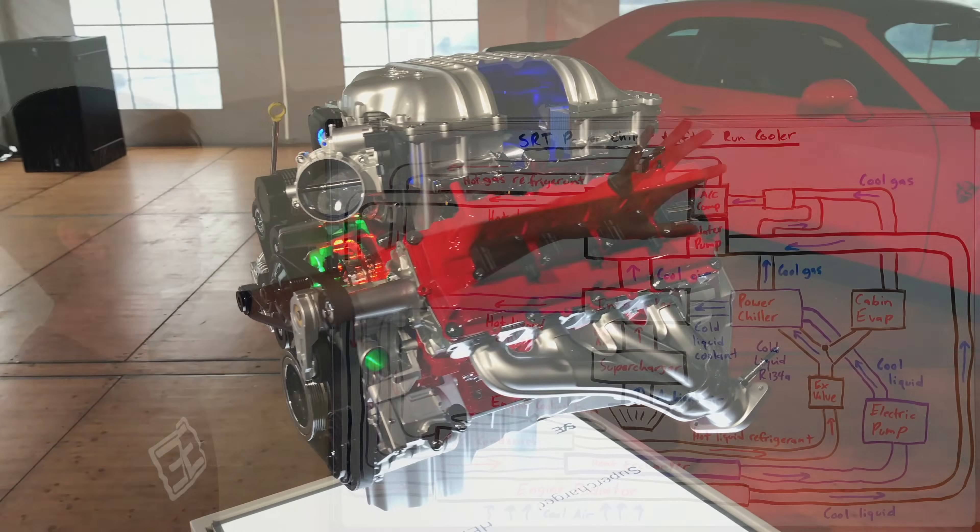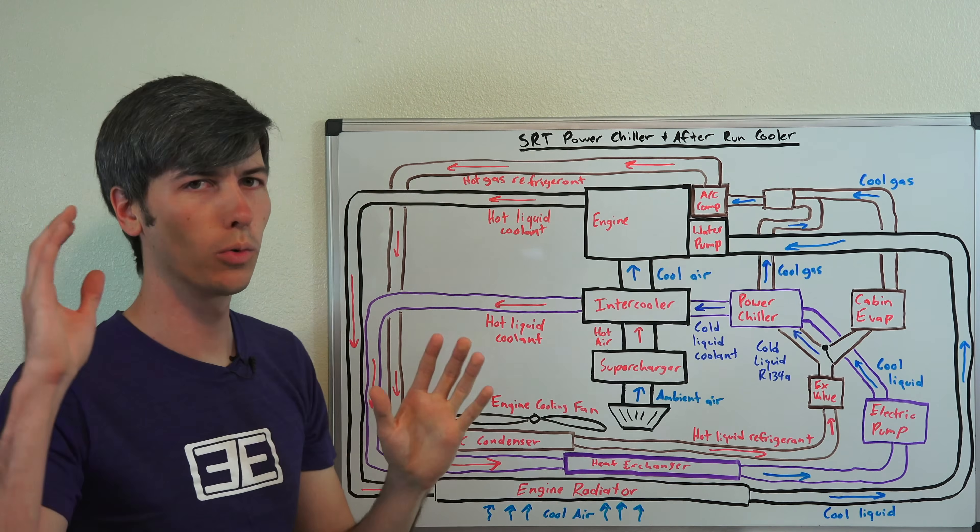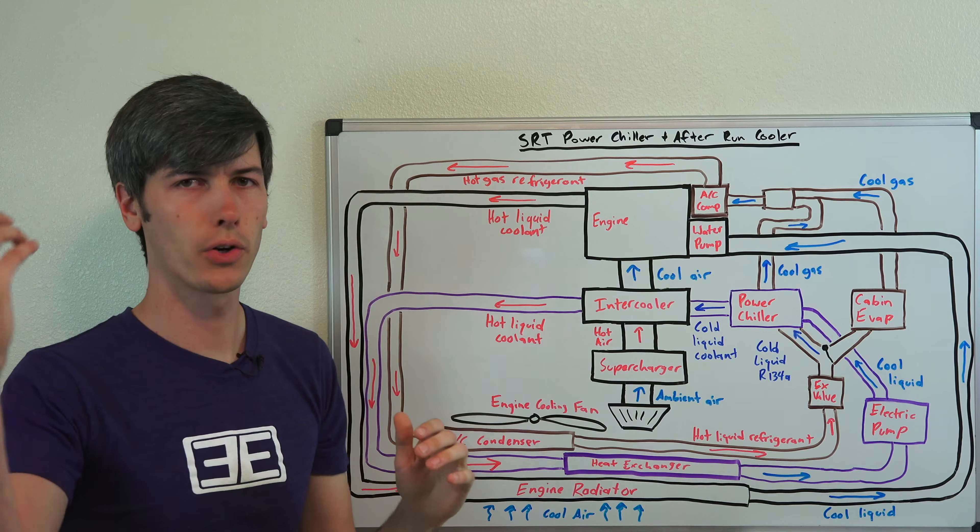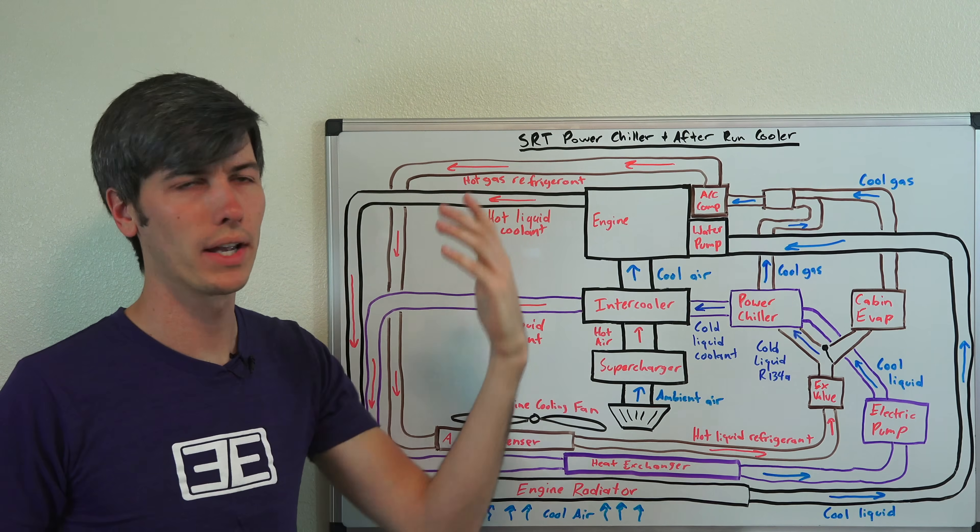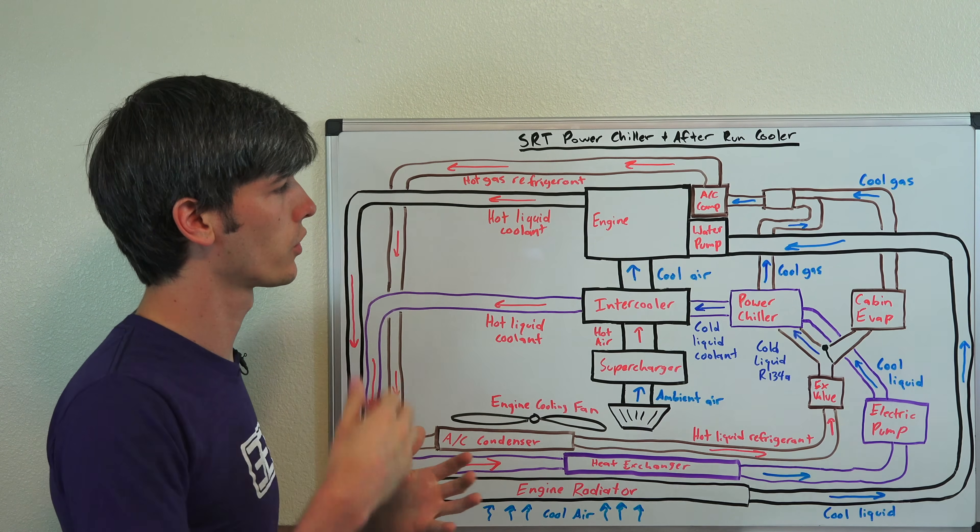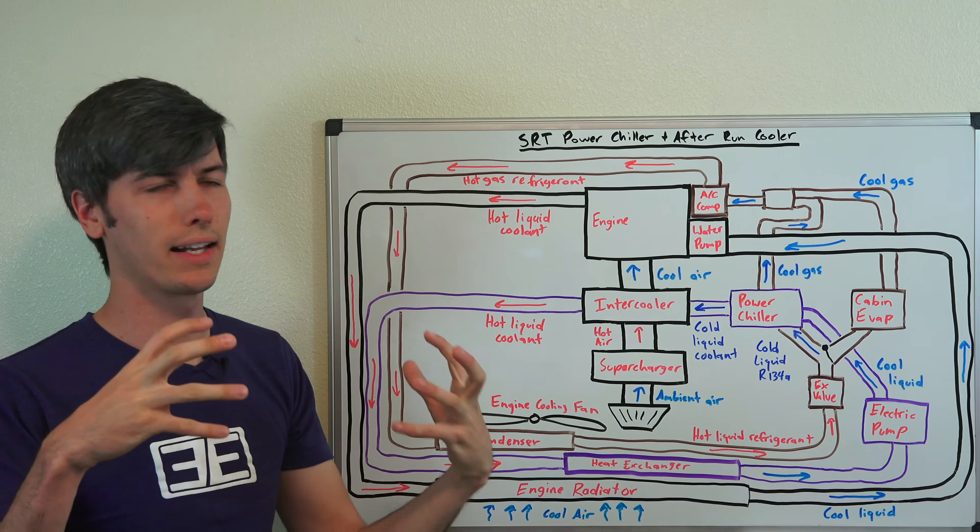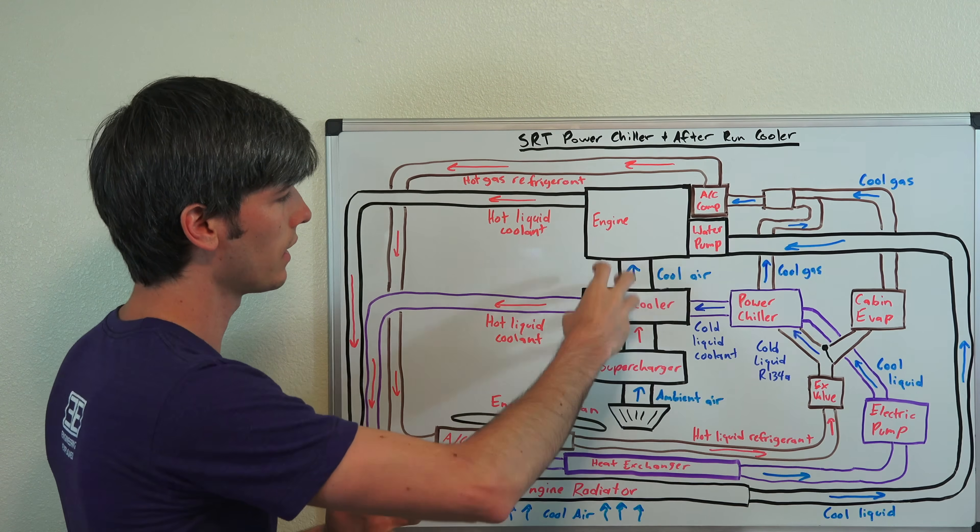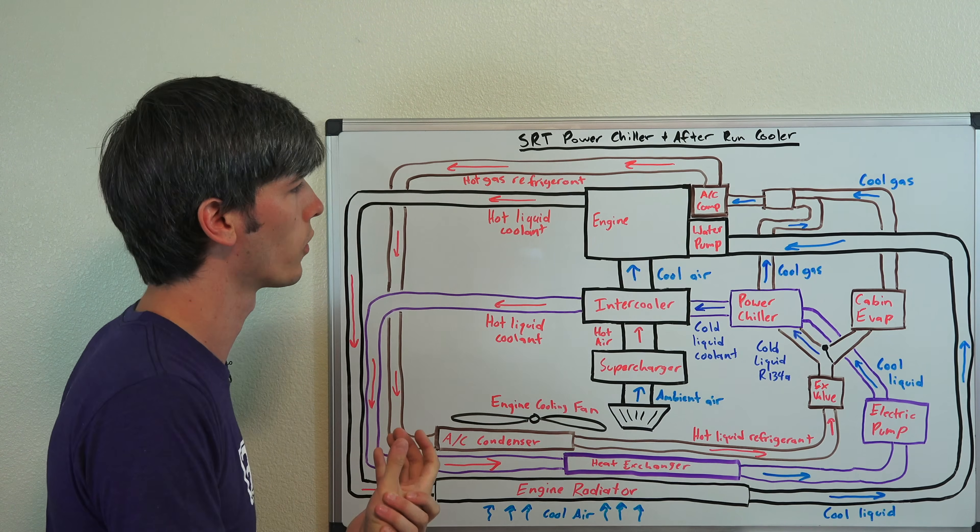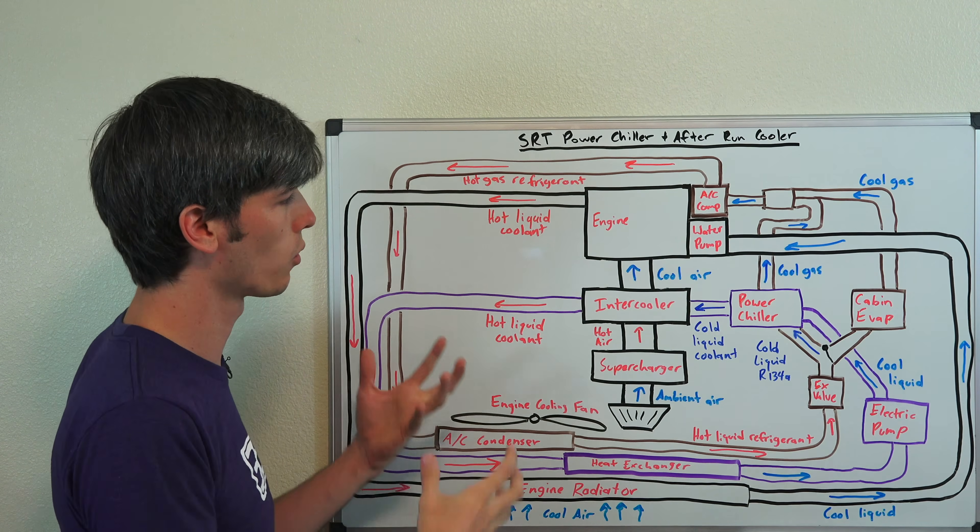And finally, let's get into this after run cooler. So once you run down the drag strip, you're turning around, you're coming back, you're going to start waiting in line, or let's say you're just going to go take a break, and you're going to shut your car off. So you shut your car off, and you don't want that to heat soak the intake air, so that the next time you go for a run, that air is really hot. So what the system does,